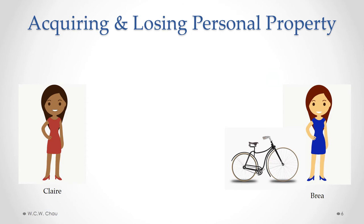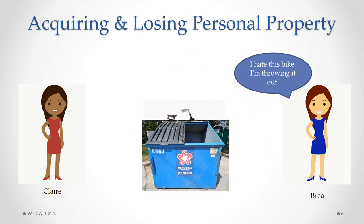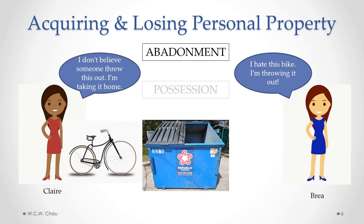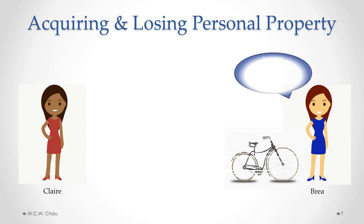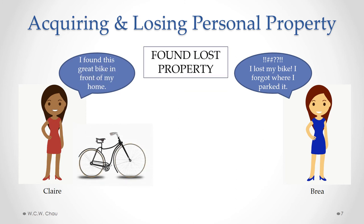Let's say Bria now absolutely hates her bike and she wants to throw it out, so she picks it up and flings it into the dumpster. That's called an abandonment. Claire happens to be walking by the dumpster, sees the bike, likes it, and takes it out to bring home for her to use. She's taken possession of the bike and has become the new owner of that bike.